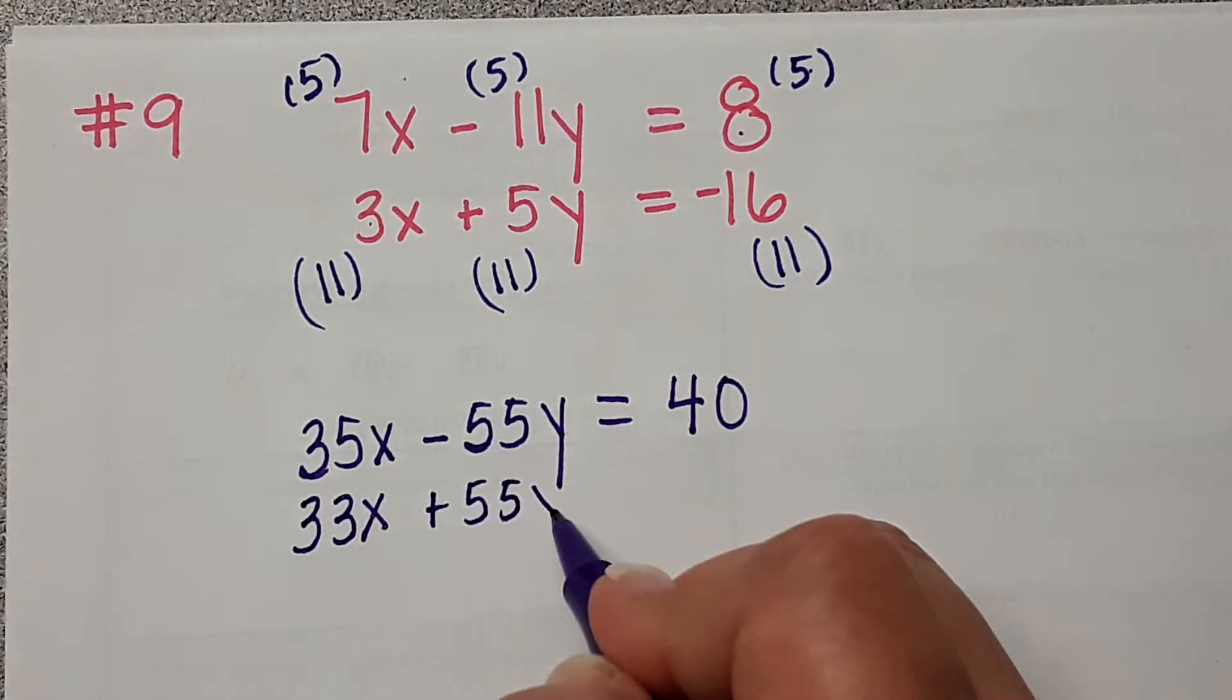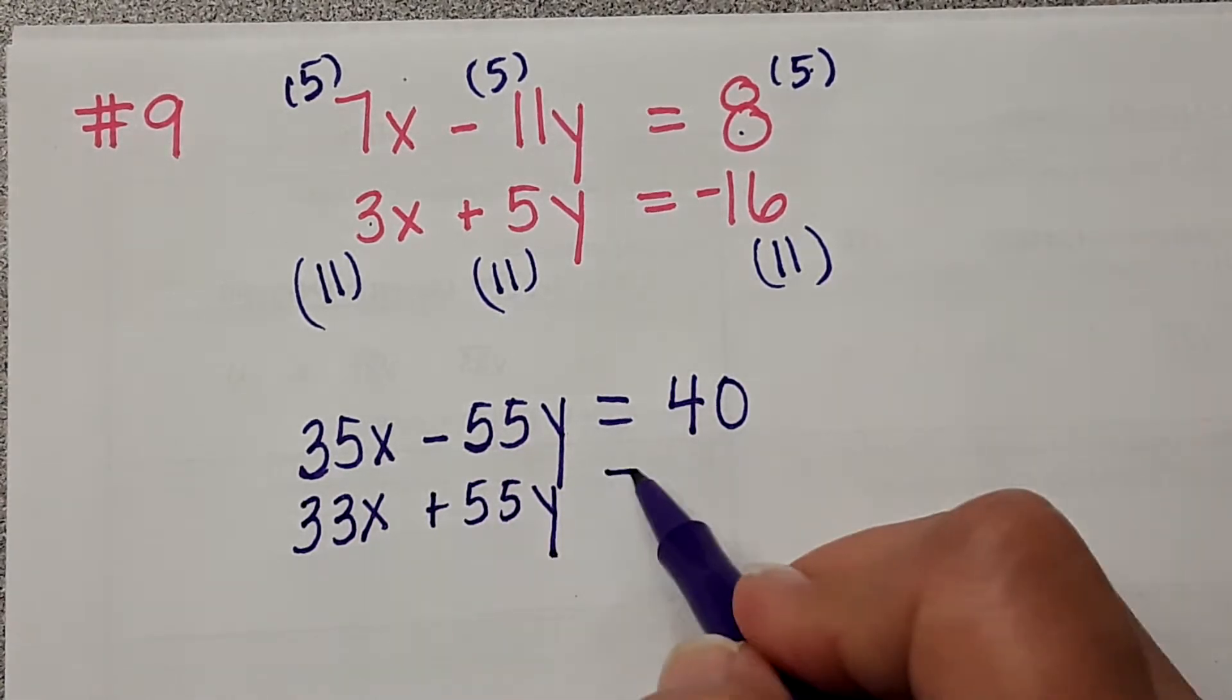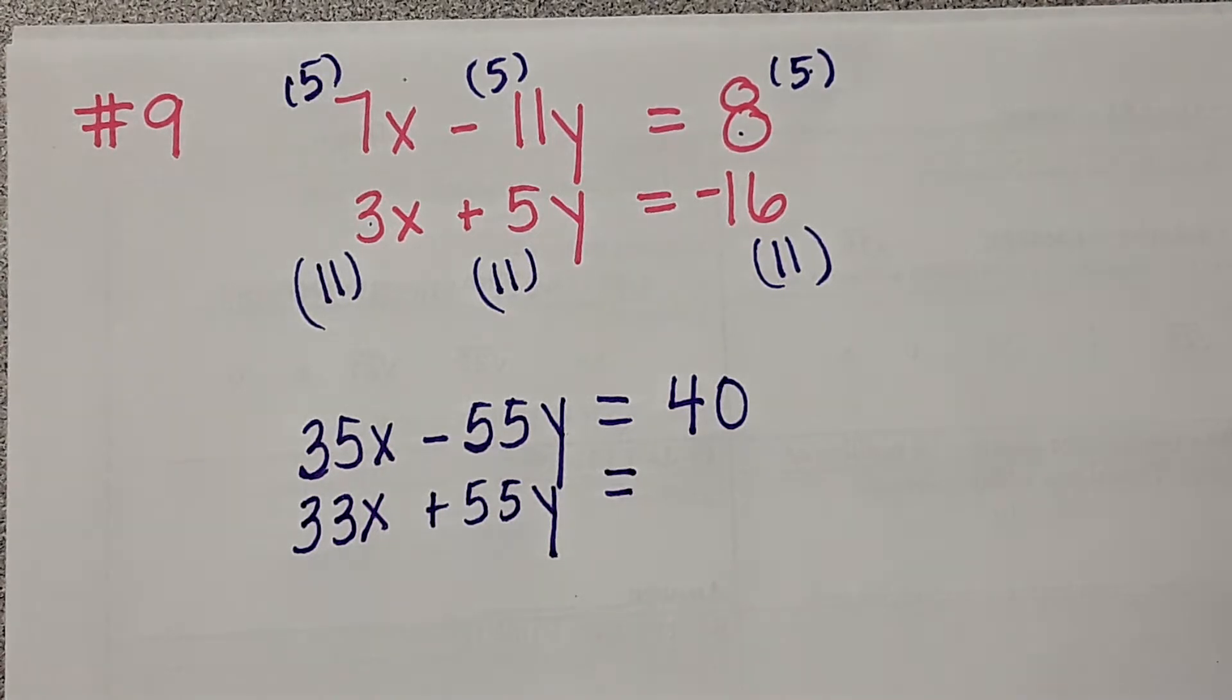Positive 55y. And negative 16 times 11 is 176.